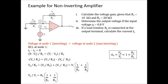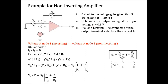Let's do one example for the non-inverting amplifier. Given R1 = 10 kΩ and R2 = 20 kΩ, calculate the voltage gain. Also determine the output voltage if the input is 0.8 V, and calculate the current IL if a load resistor RL is connected at the output terminal. At first glance you can see this is a non-inverting amplifier, so use the equation 1 plus R2 over R1 directly.